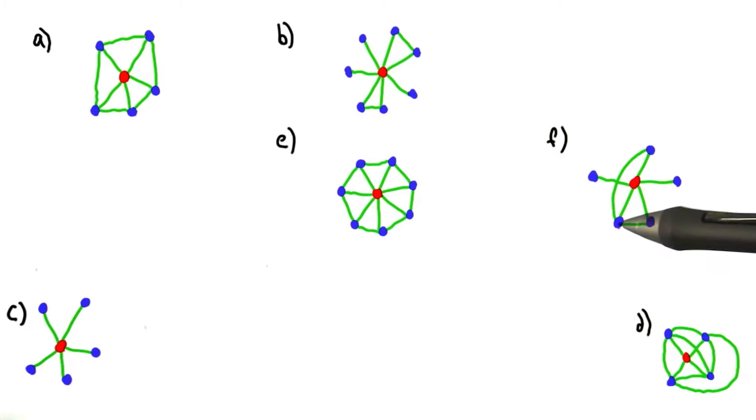Both B and F have two edges connecting the neighbors of the red node. So let's take a look at those two.